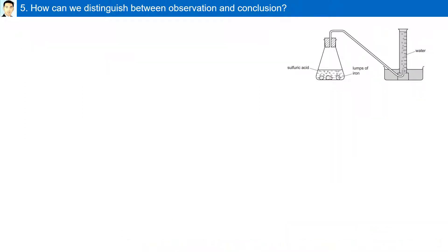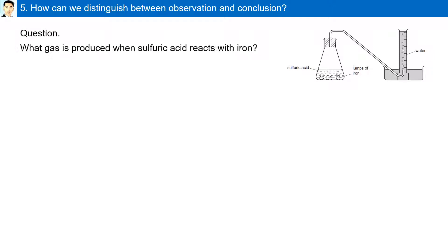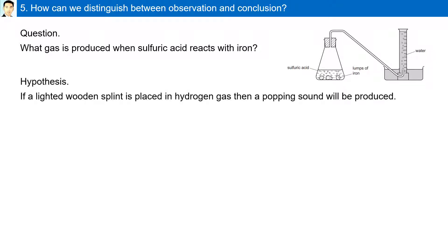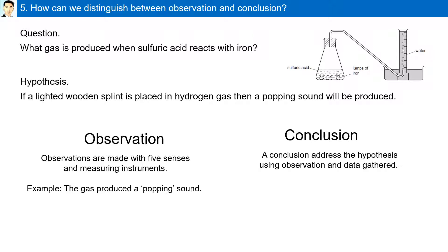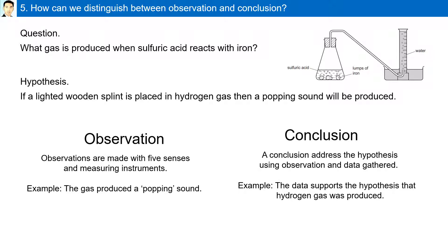How can we distinguish between observation and conclusion? Answering the question of what gas is produced when sulfuric acid reacts with iron, a hypothesis could be: if a lighted wooden splint is placed in hydrogen gas, then a popping sound will be produced. From observation using the five senses, the gas produced a popping sound. The conclusion addresses the hypothesis using the observation: the data supports the hypothesis that hydrogen gas was produced.